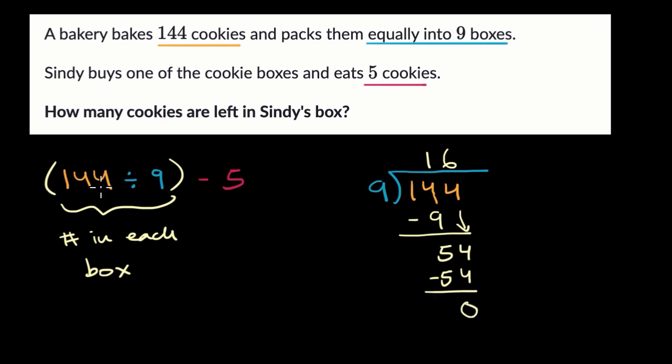So 144 divided by nine is 16. So we're left with 16 minus five. So Cindy had 16 cookies in her box. She eats five of them. So what is she left with? Well, 16 minus five is equal to 11. Cindy's left with 11 cookies.